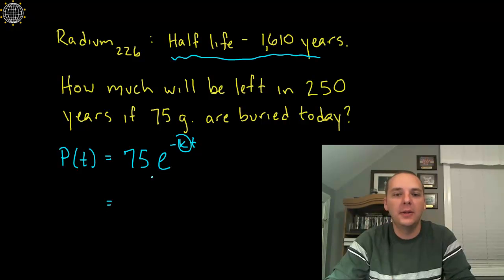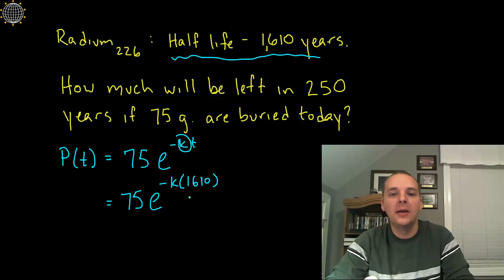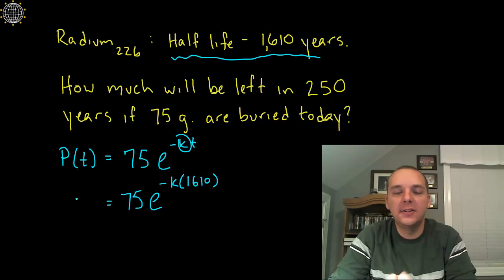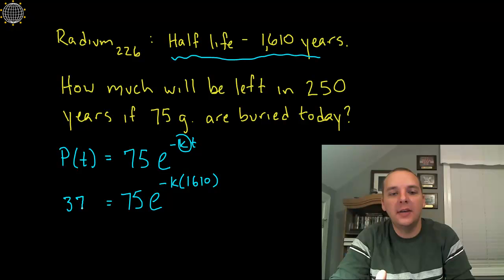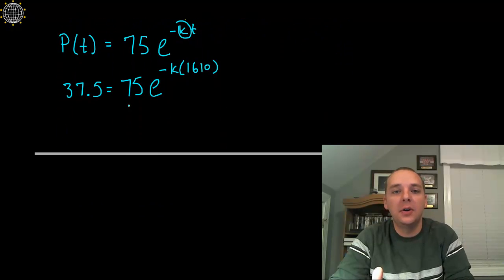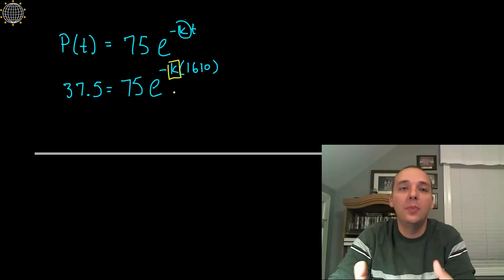Here's what we can decipher from this. If we plug in 1610 for time, you have 75 times E to the negative K times 1610. So after 1610 years on the left-hand side, we'll have half of the amount that we started with, namely 75 grams. So half of 75 grams would be 37.5 grams after 1600 years or so. And if you notice in the equation that we currently have, the only unknown is K. We can solve for that K there, and that will be our growth rate or technically our decay rate.